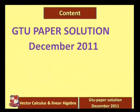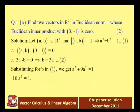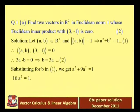Here is the first question: Find two vectors in R² with Euclidean norm 1 whose Euclidean inner product with (3, -1) is 0. This question asks for two marks. You have to find two vectors in R² with Euclidean norm 1.